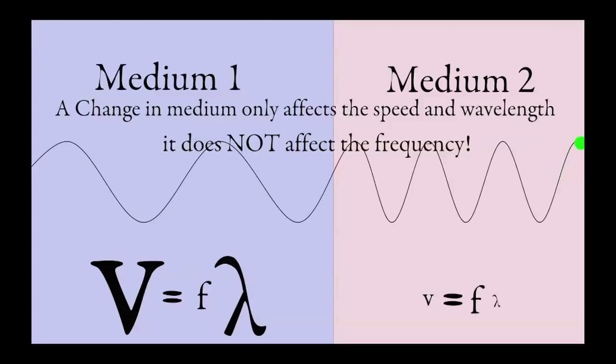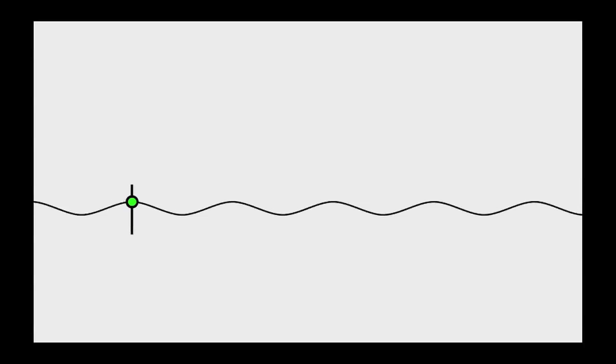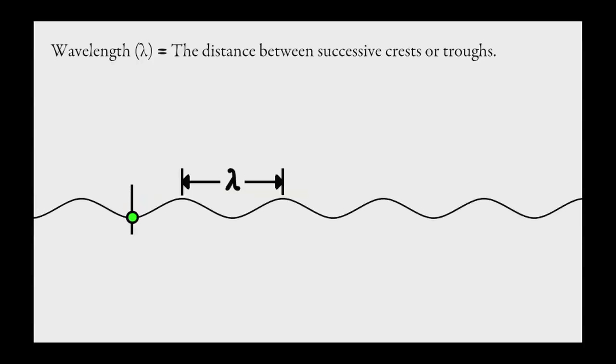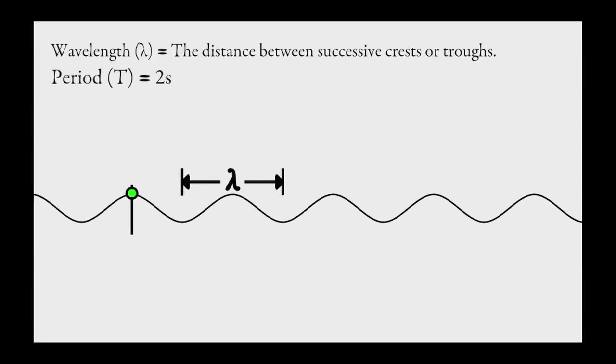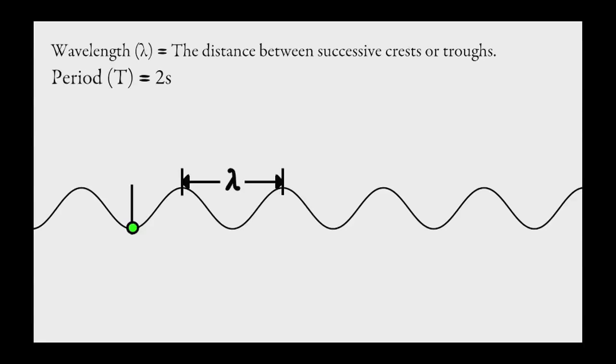So, how do we determine the speed of a wave? Well, we can measure the distance of the wavelength, which is measuring from crest to crest. And we can also get the period, the time it takes to complete one cycle.